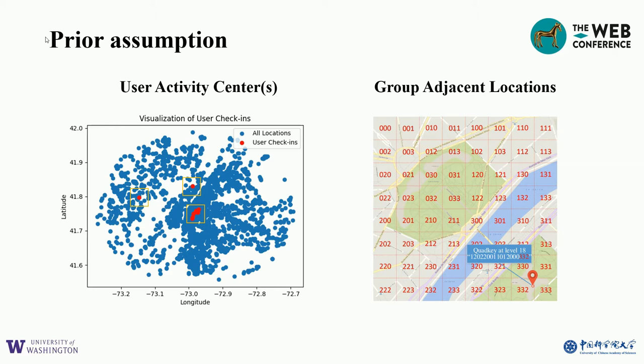Many prior works have put forward the intuition that users tend to visit locations in several areas. In the exemplified figure on the left, the user check-ins can be divided into three groups, and each group contains multiple spatially adjacent locations. This assumption is explainable as many people often buy groceries, drink coffee, eat, and exercise nearby their neighborhoods or workplaces. So it's natural that we divide locations into different areas or grids based on spatial distances.